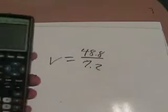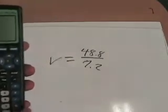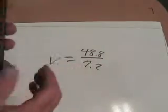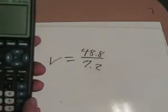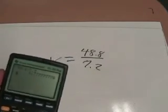So let's just try that. 48.8, interpret this as divided by, divided by 7.2. And what we get is 6.77777.